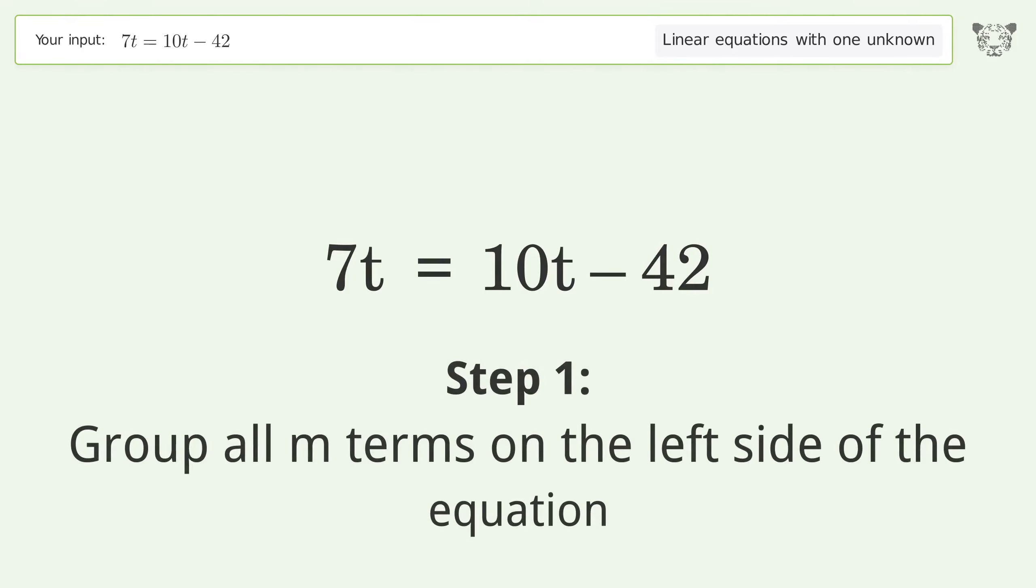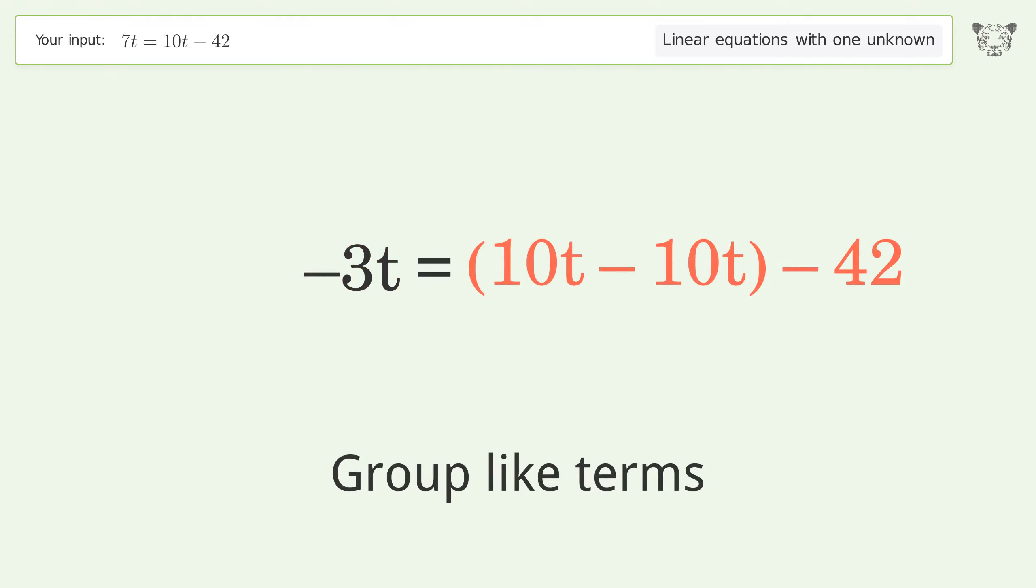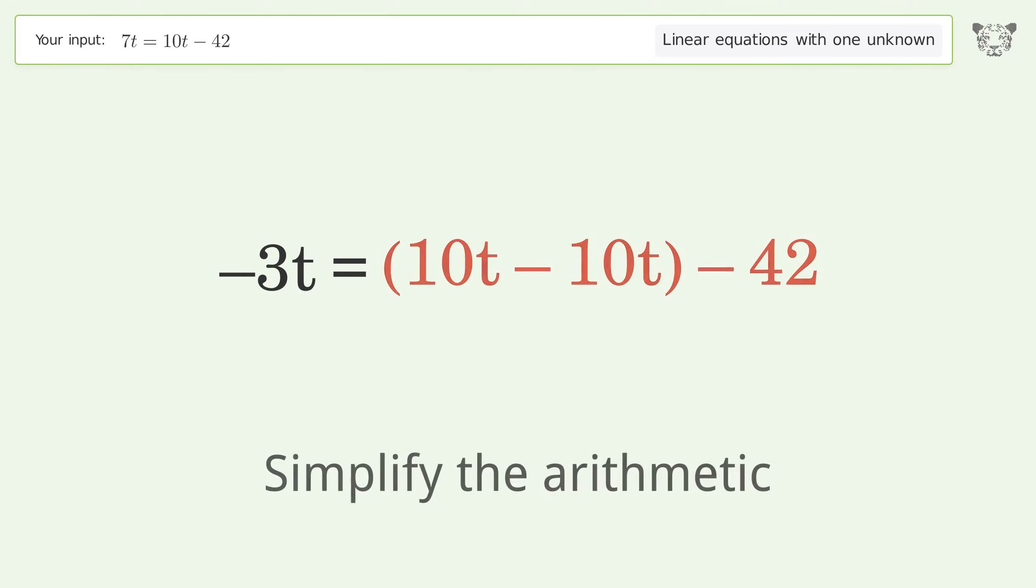Group all terms on the left side of the equation. Subtract 10t from both sides. Group like terms and simplify the arithmetic.